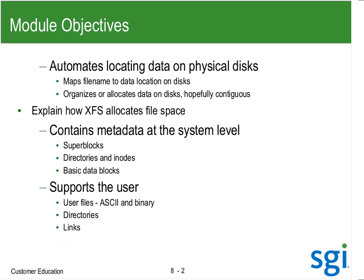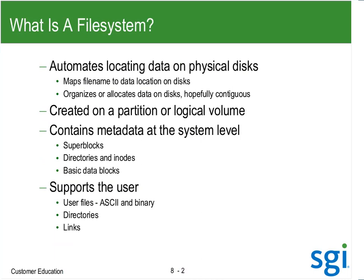A file system automatically locates data on disks — it maps the file name to a location. I don't want programs or programmers to have to worry about where to allocate it or where it is on disk. The kernel ensures two users or two programs don't allocate to the same space. The file system is created on a partition or a logical volume, and we have metadata.